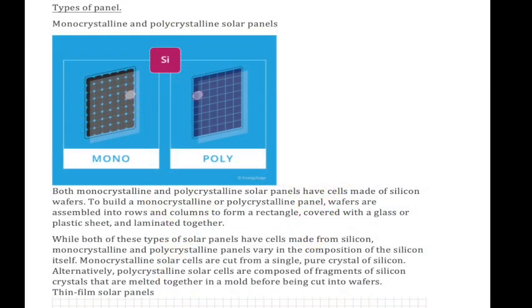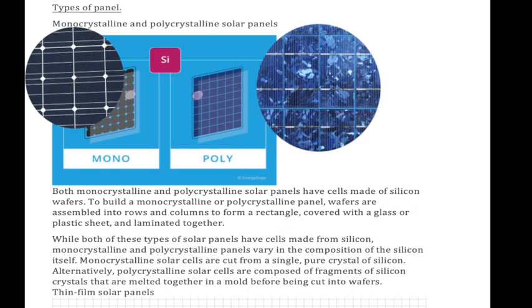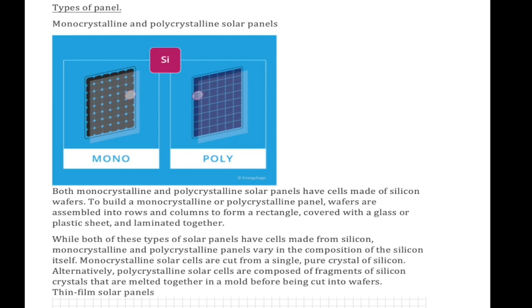So let's look at the two types of panel, the types that you're likely to be using. They are monocrystalline and polycrystalline solar panels. Both these types of panel have cells made of silicon wafers. To build up a monocrystalline or polycrystalline panel, wafers are assembled in rows and columns to form a rectangle covered with glass or plastic sheet and laminated together.